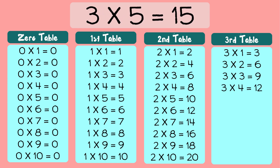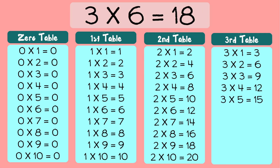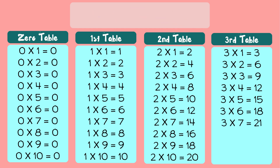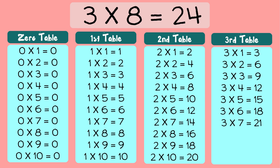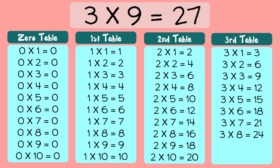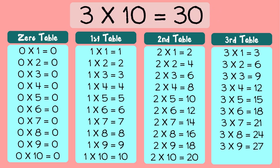Three fives are fifteen. Three sixes are eighteen. Three sevens are twenty-one. Three eights are twenty-four. Three nines are twenty-seven. And three tens are thirty.